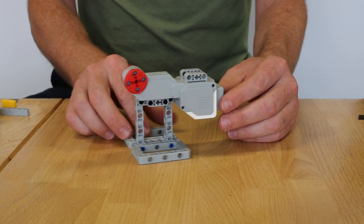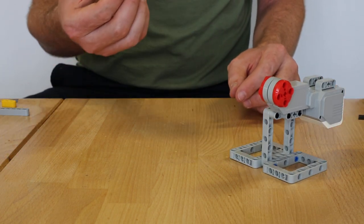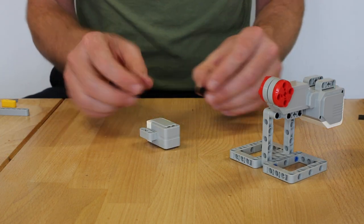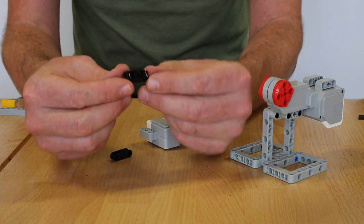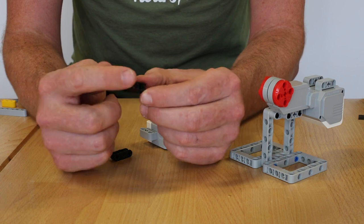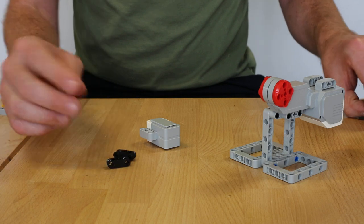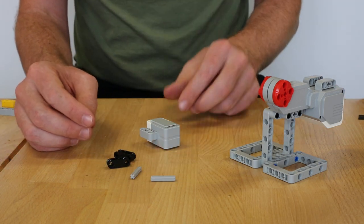Now the next thing we need to do is make up the attachment for the gyroscope. I've got these pieces here. They have two axle holes on the ends, and in the middle at 90 degrees they have a hole for a clip. We're going to use those and some three-long axles.